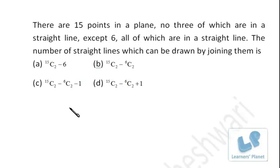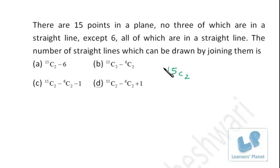There are 15 points in a plane, no three of which are in a straight line except six, all of which are in a straight line. We need to find the number of straight lines that can be drawn by joining them. Since it takes two points to make one straight line, we find all combinations of two points from 15, which is 15C2. But the six points are in a straight line.